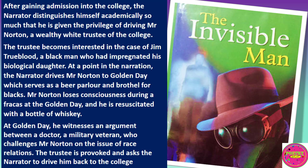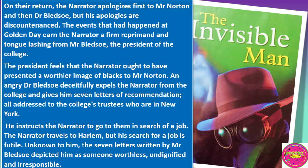After gaining admission into the college, the narrator distinguishes himself academically, so much that he is given the privilege of driving Mr. Norton, a wealthy white trustee of the college. The trustee became interested in the cause of Jim Trueblood, a black man who had impregnated his biological daughter. At a point in the narration, the narrator drives Mr. Norton to Golden Day, which serves as a beer parlor and brothel for blacks. Mr. Norton loses consciousness during a fracas at the Golden Day and is resuscitated with a bottle of whiskey. There, he witnesses an argument between a doctor, a military veteran, who challenges Norton on the issue of race relations. The trustee is provoked and asks the narrator to drive him back to the college.